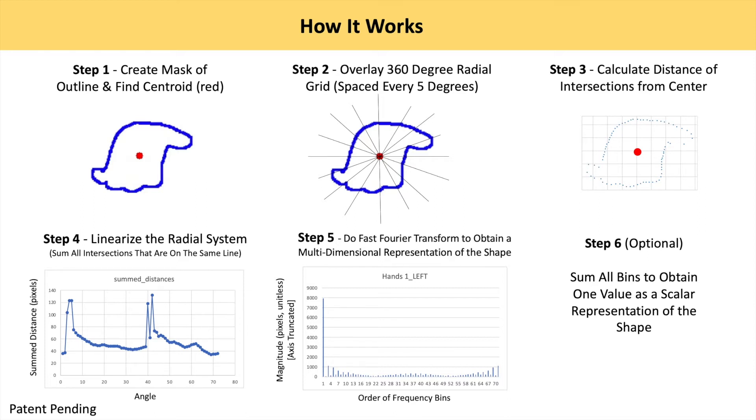In step 4, we can linearize all intersections into two dimensions as shown. In step 5, we apply the fast Fourier transform to obtain a frequency plot that is a multidimensional representation of the shape in step 1.